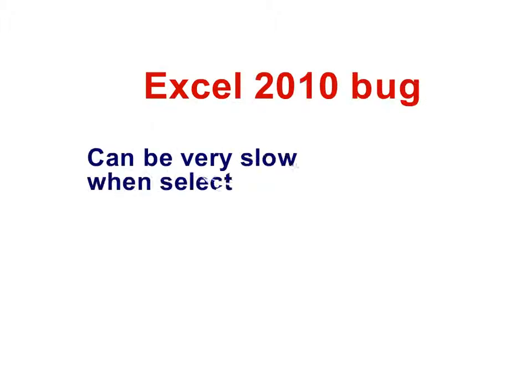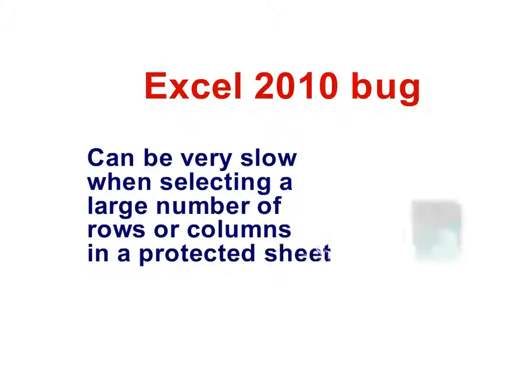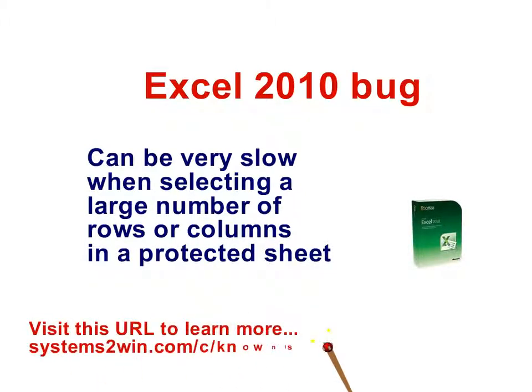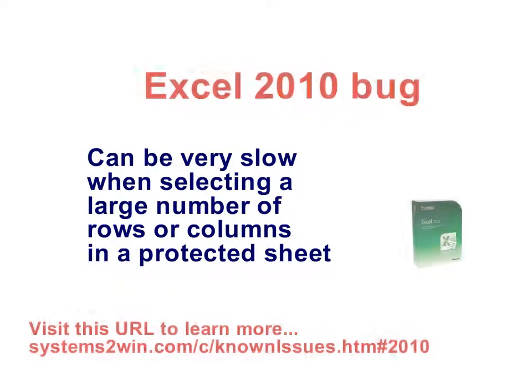If you're using Microsoft Excel 2010 or higher, you need to be aware of a new bug that Microsoft has told us they have no intention of fixing: when you select a large number of hidden rows or columns in a protected worksheet, it can be very slow before it allows you to do anything else.